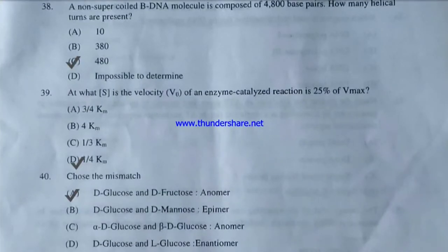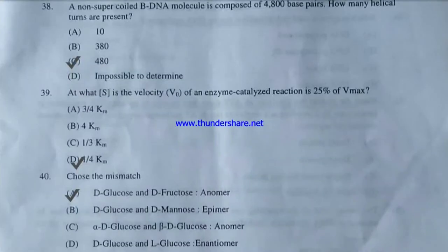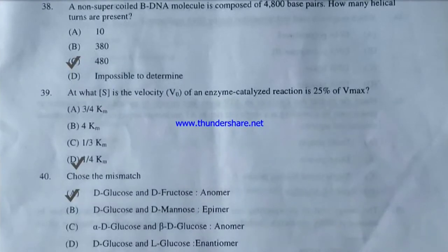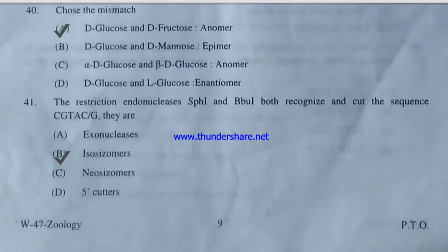Question 40 — choose the mismatch: D-glucose and D-fructose are anomers; D-glucose and D-mannose are epimers; alpha-D-glucose and beta-D-glucose are anomers; or D-glucose and L-glucose are enantiomers. Options B, C, and D are correct. The mismatch is option A — D-glucose and D-fructose are not anomers; they are stereoisomers.